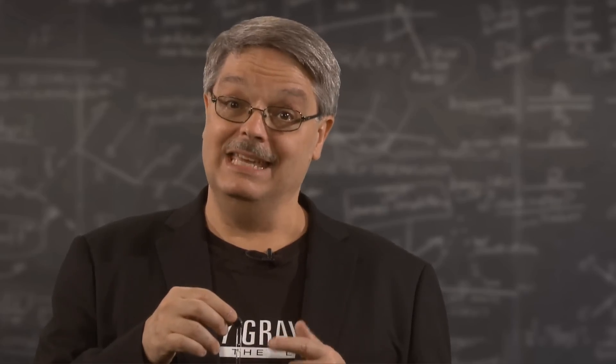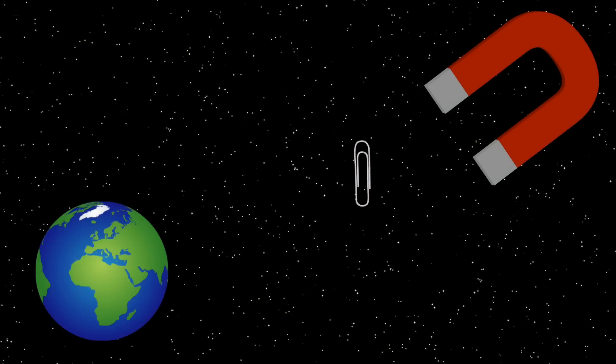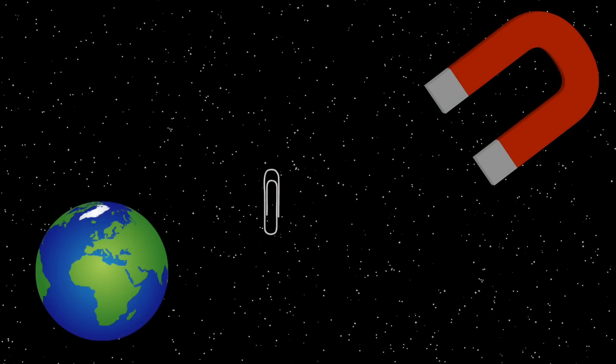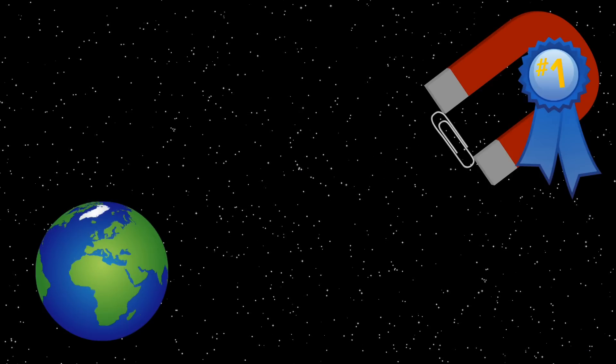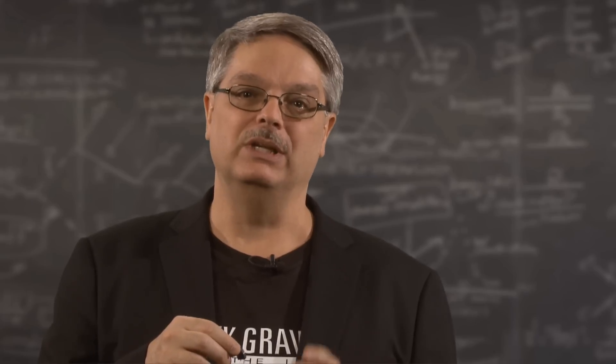I'll say that again a bit slower. A tiny little magnet is pulling the paperclip upwards and the gravity of an entire planet is pulling the paperclip downwards and the magnet wins. If you think about it a bit, this means that gravity is really an incredibly weak force.